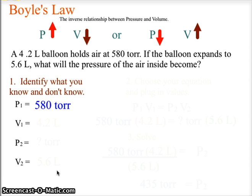We are not worried about the temperature because when we are dealing with Boyle's Law, temperature is held constant. The first unit we deal with is 580 torr of pressure. Our initial volume is 4.2 liters.